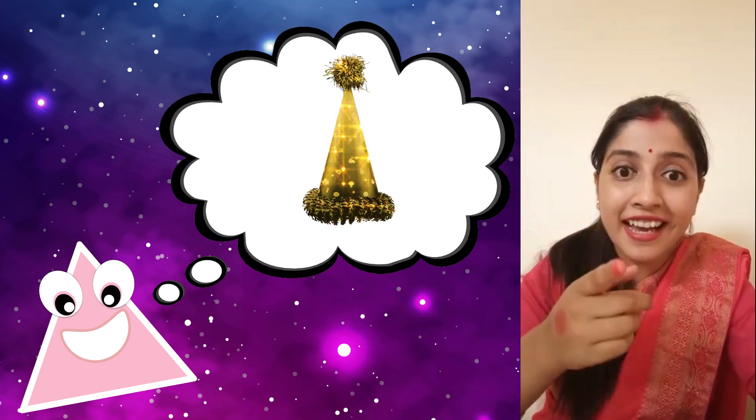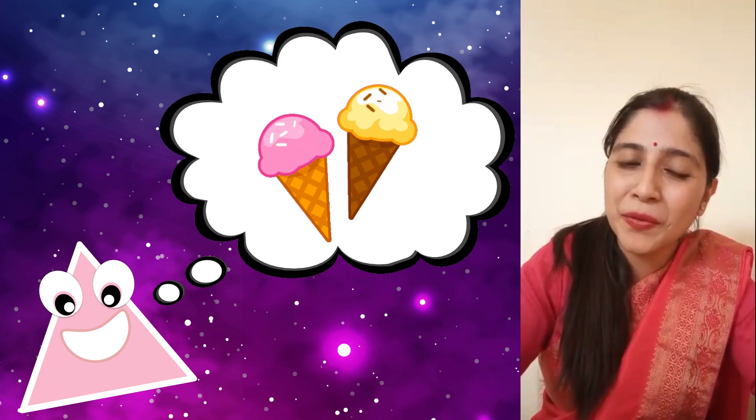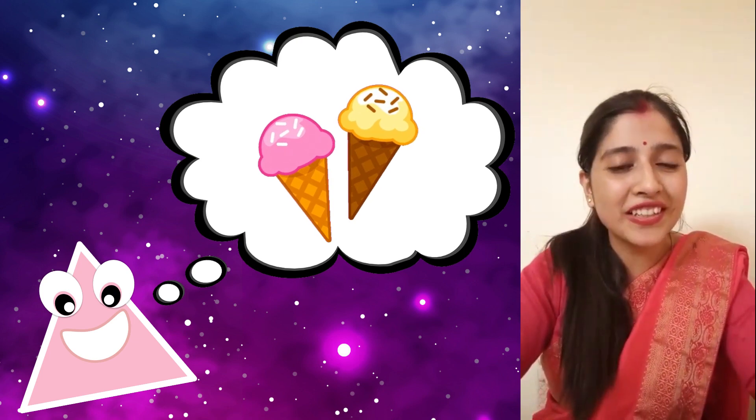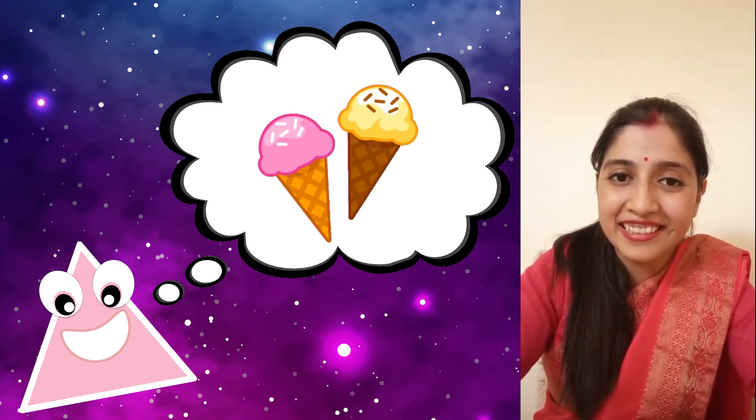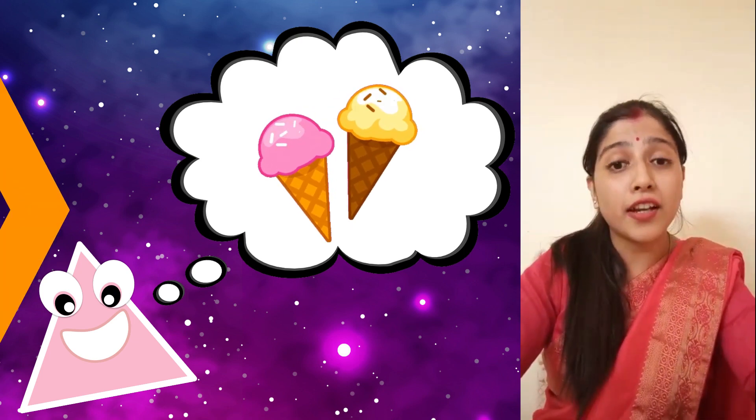Another example is an Ice Cream Cone. Yes, the ice cream cone also looks like a triangle. Now I hope you all understand the shape of triangle. Your homework is that next time please find out this shape. Till then, bye-bye.